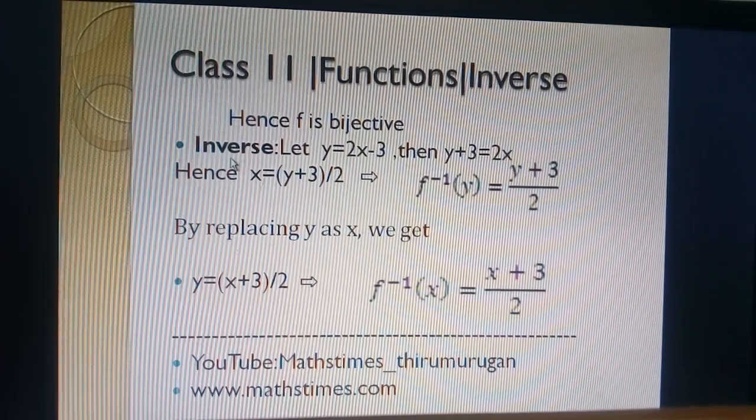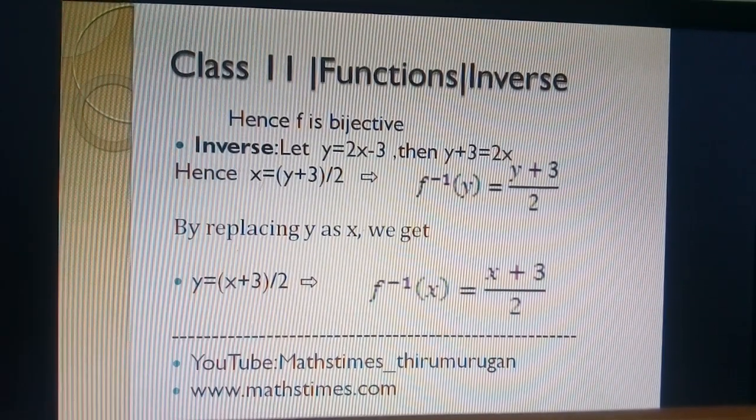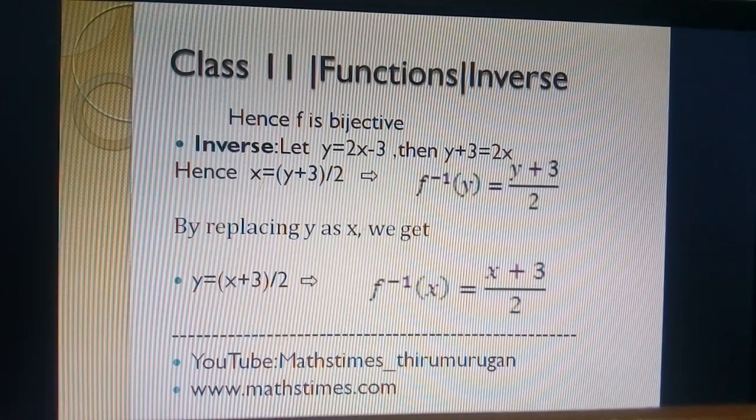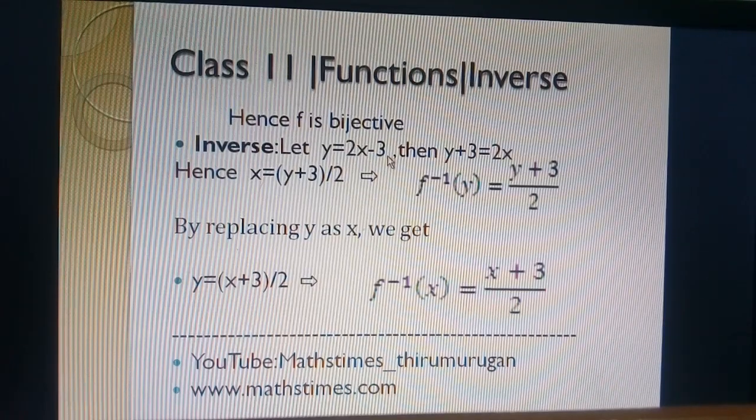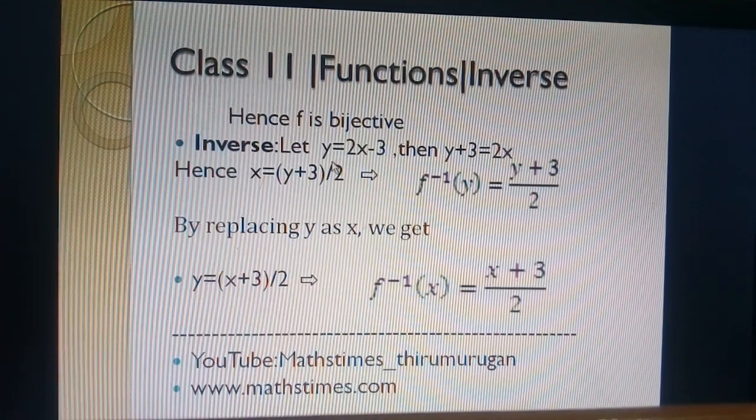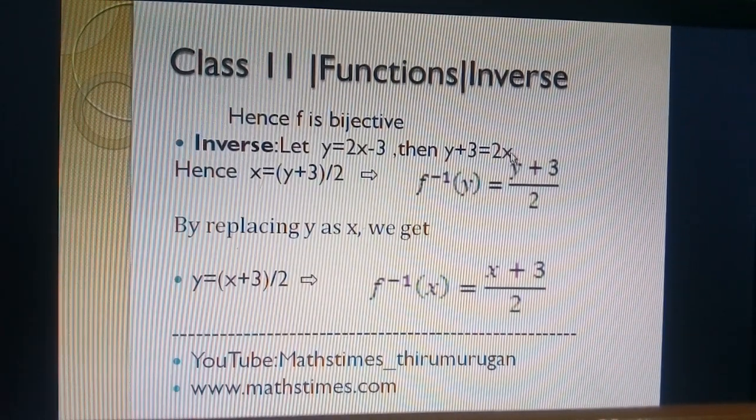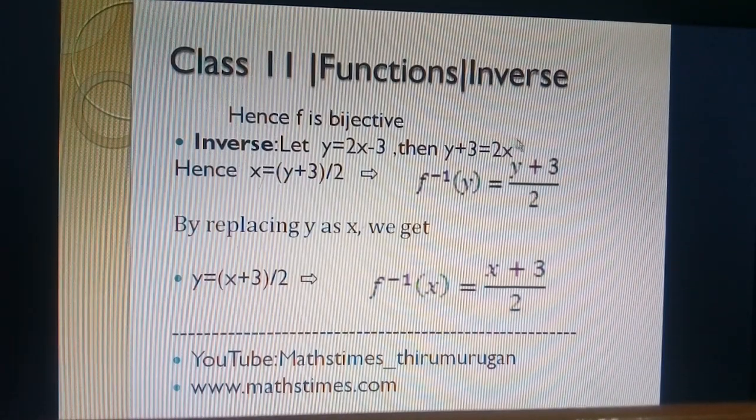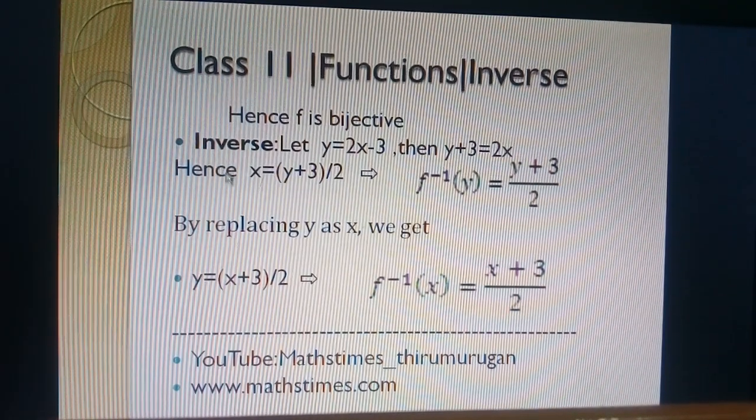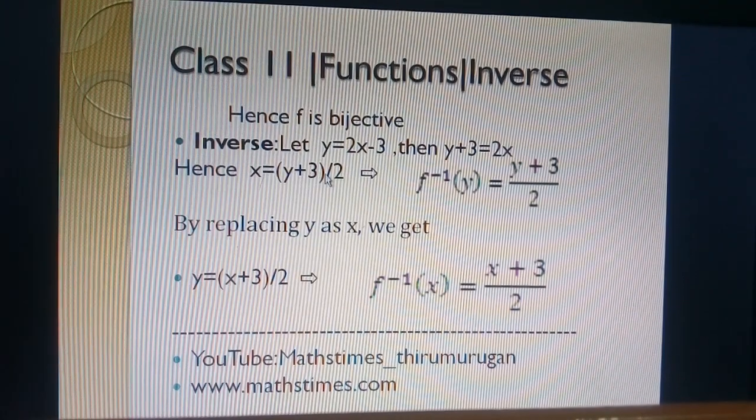Next, we find inverse. For finding the inverse, we take f(x) as y. So, y = 2x - 3. Bring minus 3 to left side: y + 3 = 2x. Then, we get x value from this equation: x = (y + 3)/2.